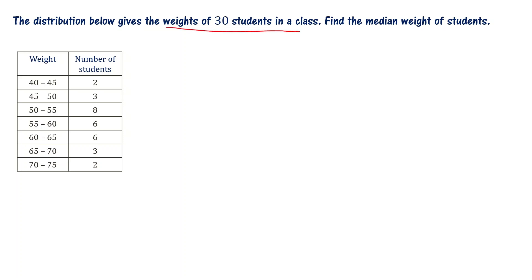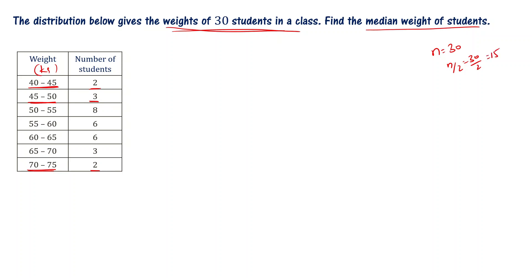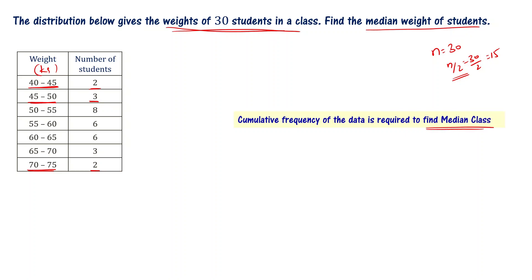The distribution below gives the weights of 30 students in a class. Find the median weight of the students. Weight ranges (in kg): 40–45 has 2 students, 45–50 has 3 students, and so on up to 70–75 with 2 students — total 30 students. So N = 30, and N/2 = 30/2 = 15. We need to find the cumulative frequency to identify the median class. Let us add a cumulative frequency column.